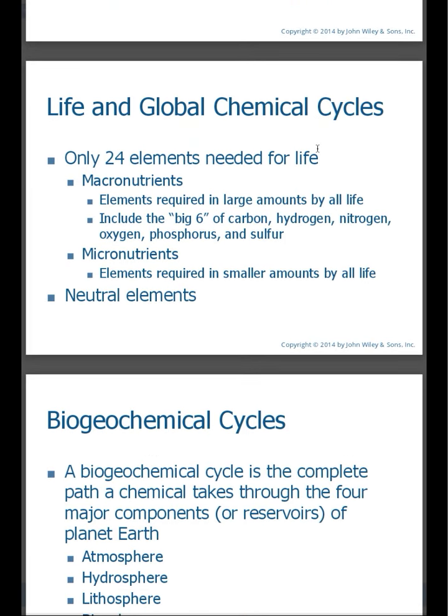Only 24 elements are needed for life. When we talk about the macronutrients, these are elements that are required in large amounts by all life. Our cells — we are made up as carbon-based units. We need oxygen and nitrogen, phosphorus for our cellular structure, sulfur, hydrogen — all these things we need. And then micronutrients are required in smaller amounts by all life.